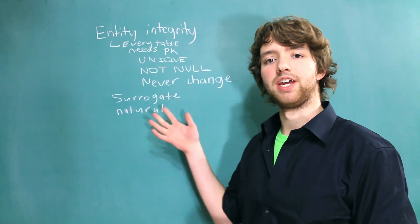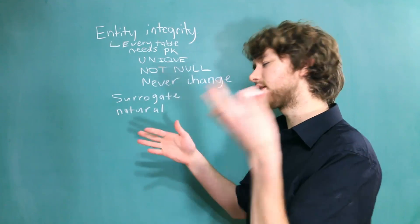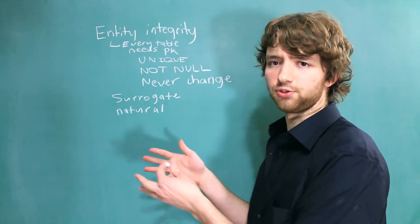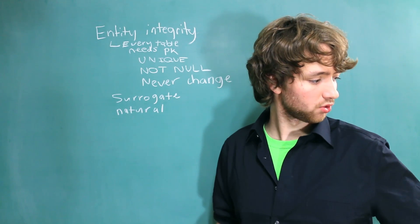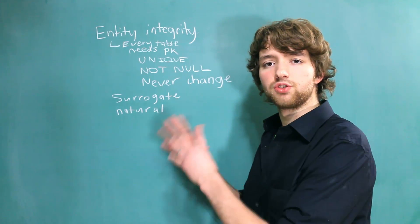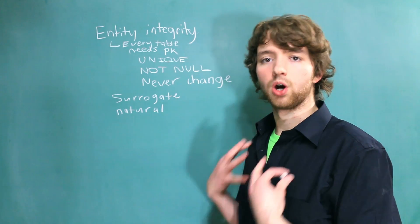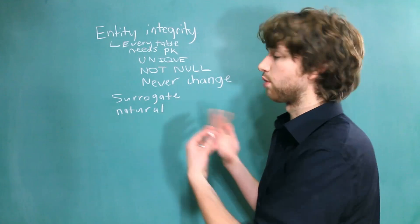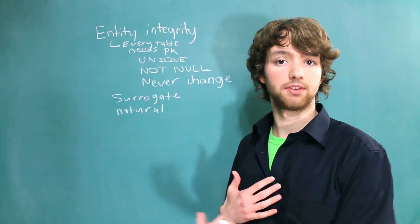Now this is not something we tell the database. We don't say, "yo database, this is a surrogate key or this is a natural key." These are just terms for us to help understand the different kinds of keys. And these are terms people are going to use, so you need to understand them.